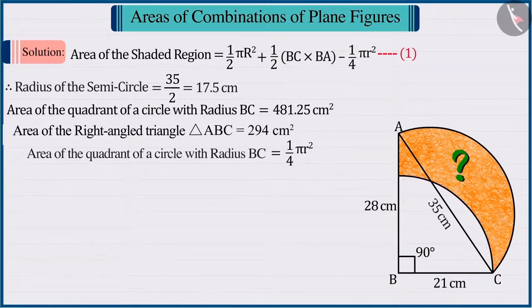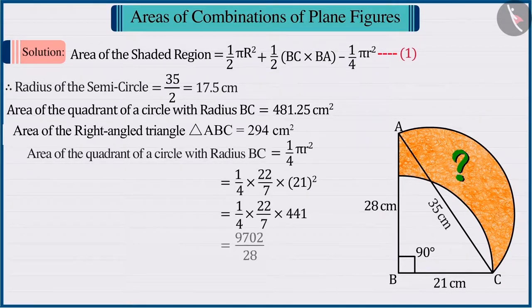Correct! Substituting the value of the radius as 21 cm in the formula for the area of the quadrant of a circle and solving, its area is obtained as 346.5 cm².